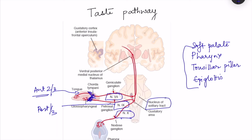All three nerves reach the nucleus tractus solitarius (NTS) in the brainstem, where they synapse. So the first order neuron runs from the taste receptors via these cranial nerves to the nucleus tractus solitarius.